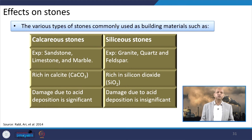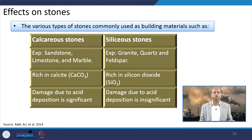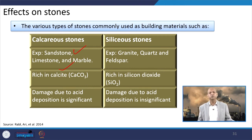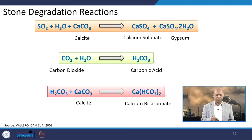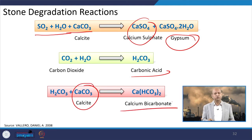When we talk about effects on stones because of air pollutants, we mainly discuss calcareous stones and siliceous stones. Siliceous stones such as granite are more sturdy and not as much affected by air pollutants. But sandstones, limestones, and marbles are very susceptible to the SO2 pollutant because of acid deposition. A simple reaction occurs: CaCO3 reacts with SO2, forming calcium sulfate and gypsum. Carbonic acid can also react with CaCO3 to form calcium bicarbonate. So that kind of stone is very much susceptible to an acidic atmospheric environment.